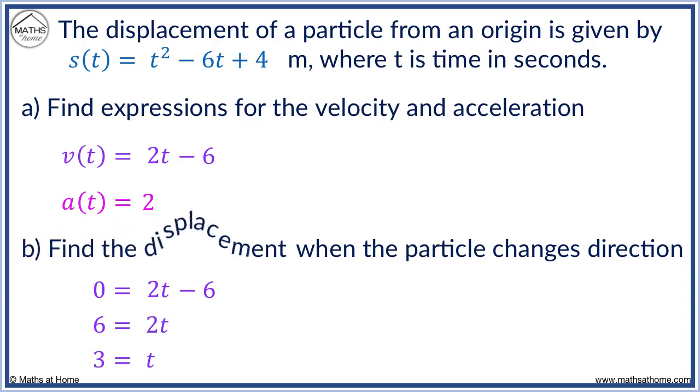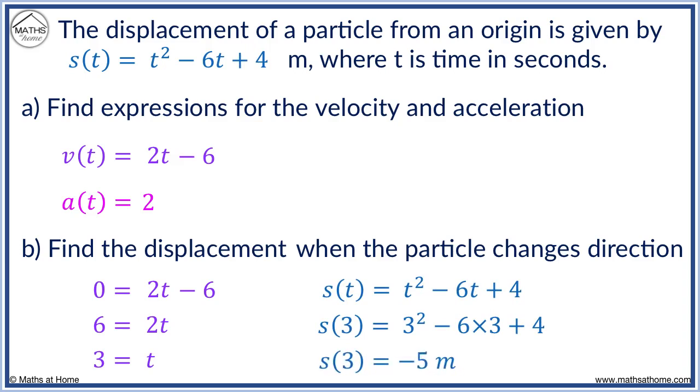Now we find the displacement when T equals 3. We sub T equals 3 into the S equation and work this out to get minus 5 meters. Negative displacement simply means that the particle is on the other side of the origin. For example, it may be 5 meters left instead of right.